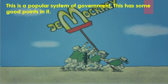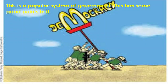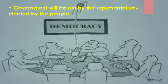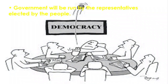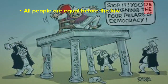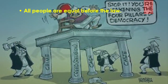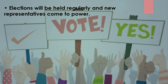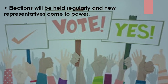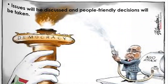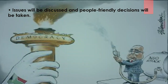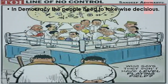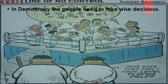This is a popular system of government and has some good points. Government will be run by representatives elected by the people. All people are equal before the law. Elections will be held regularly and new representatives come to power. Issues will be discussed and people-friendly decisions will be taken. In democracy, the people need to take wise decisions.